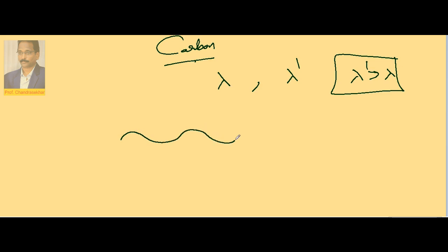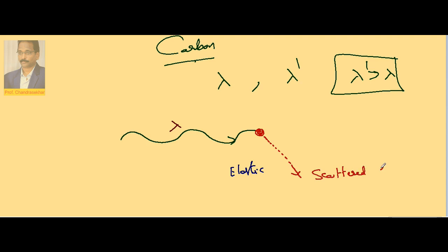Imagine an x-ray moving along one direction and a free electron present inside the target. An elastic collision takes place between these two. Because of this elastic collision — the incident wavelength being lambda — the electron moves along one side as a scattered electron, and there is a scattered x-ray moving in another direction.